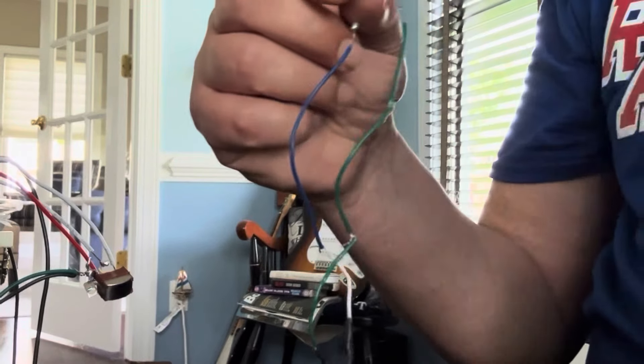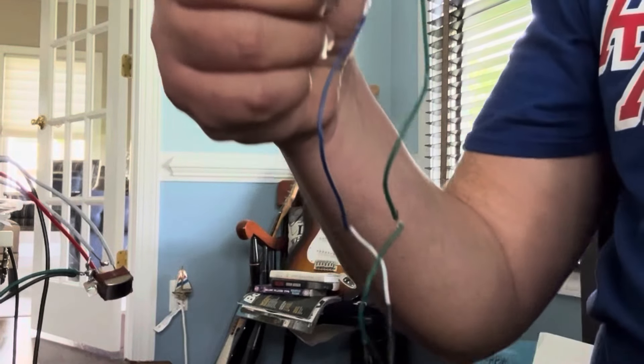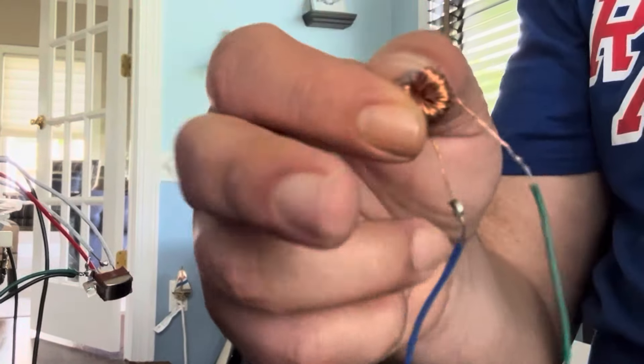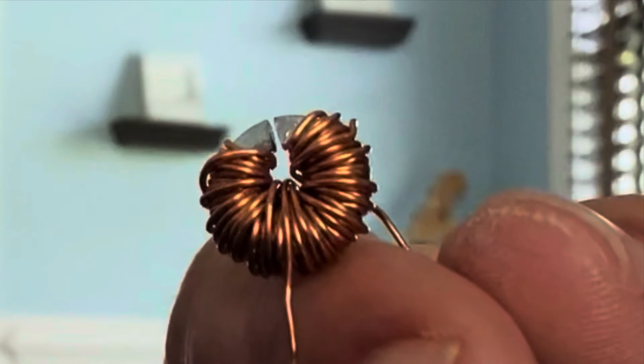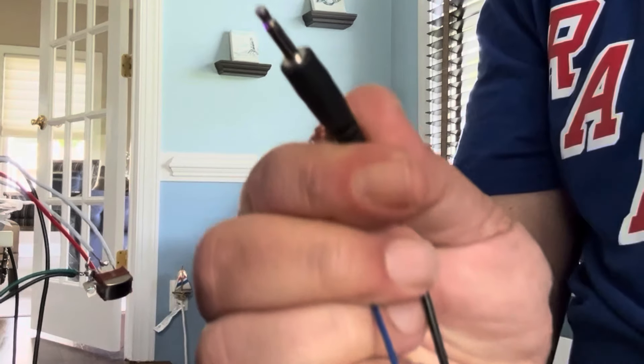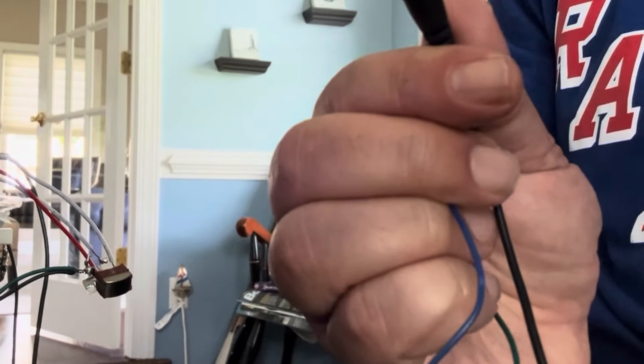And all it is is basically this little washer with a hole in it, a gap in it. And it's wrapped with copper wire. And one side goes to ground, one side goes to the input signal of this jack.